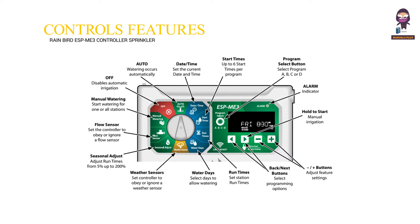Controls and features. Auto-watering occurs automatically. Date/time: set the current date and time. Start times: up to 6 start times per program. Program select button: select program A, B, C, or D. Alarm indicator. Hold to start manual irrigation.